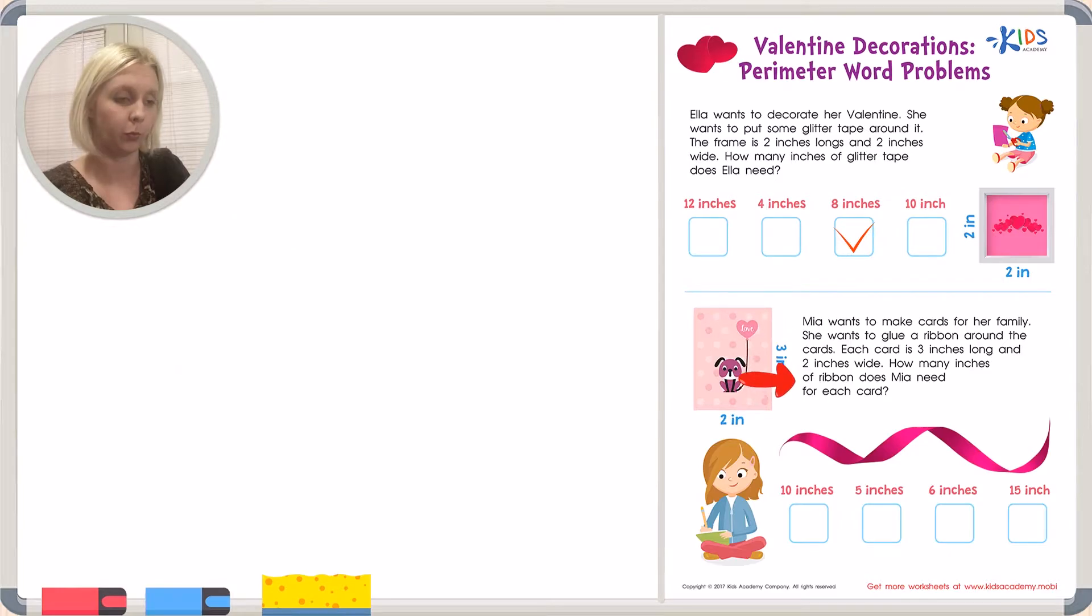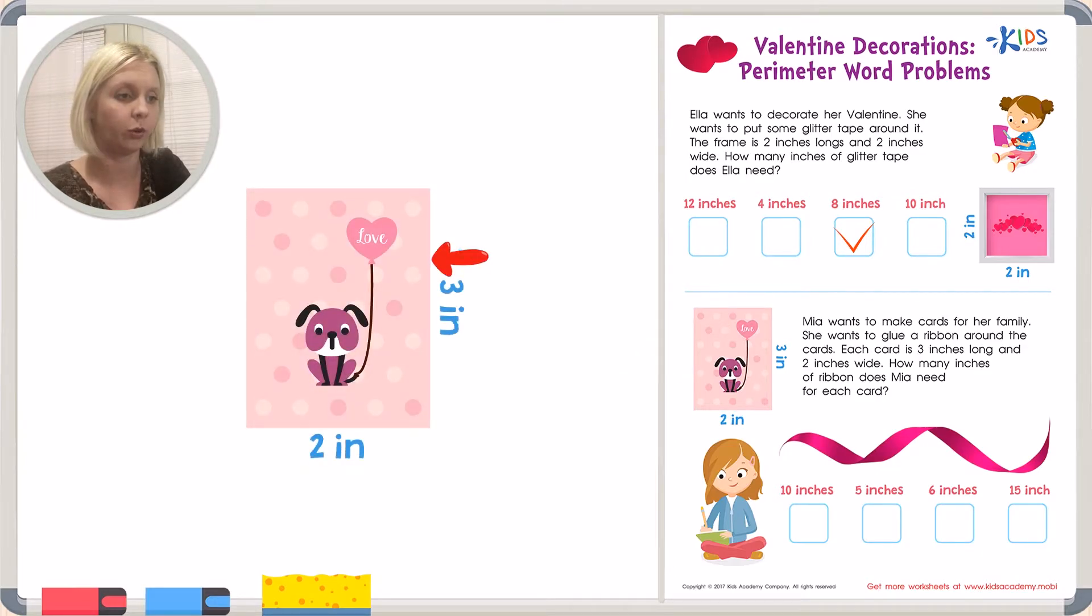Now let's go down to our second word problem. This says, Mia wants to make cards for her family. She wants to glue a ribbon around the cards. Each card is 3 inches long and 2 inches wide. How many inches of ribbon does Mia need for each card? They've shown us a picture here of the card and they've labeled 2 sides. It's perimeter which means we just need to know ribbon to go on the outside of the card.